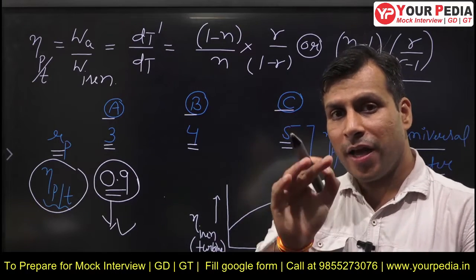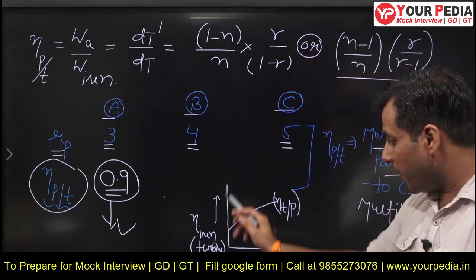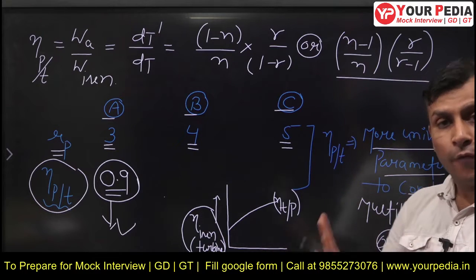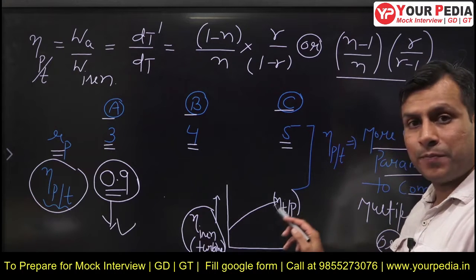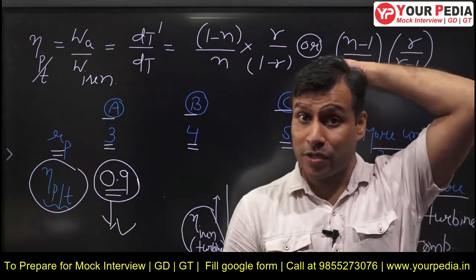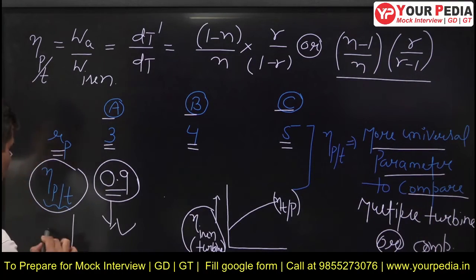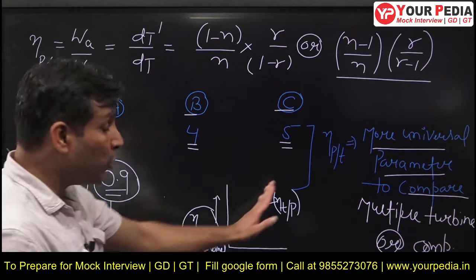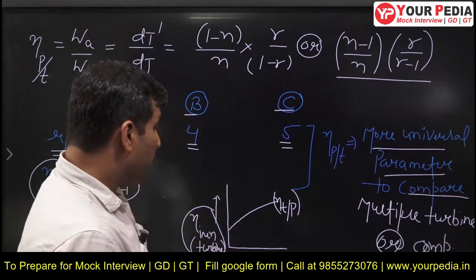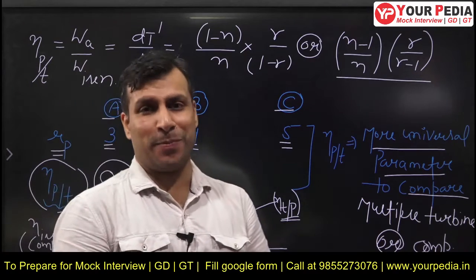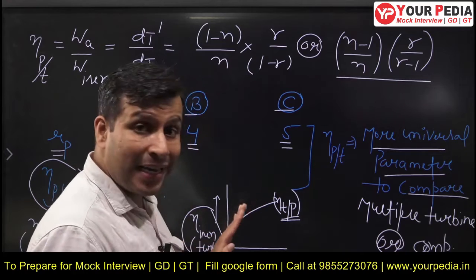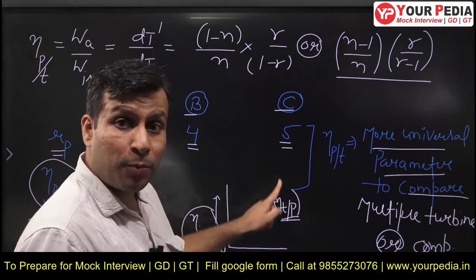I think you got the point - what is polytropic efficiency. One more thing: for a turbine, if we plot isentropic efficiency on the y-axis and pressure ratio on the x-axis, isentropic efficiency increases with increasing pressure ratio for a turbine. For a compressor, the isentropic efficiency will decrease as pressure ratio increases. But the polytropic efficiency for the turbine is independent of the pressure ratio - you change the pressure ratio, but the polytropic efficiency is not going to change.